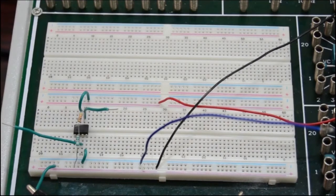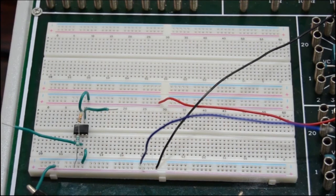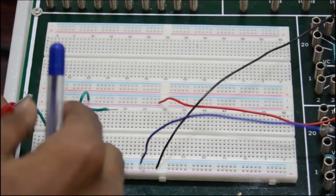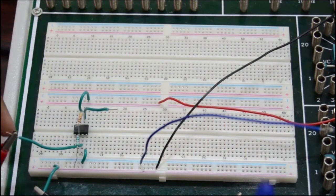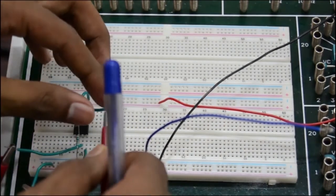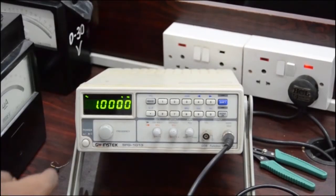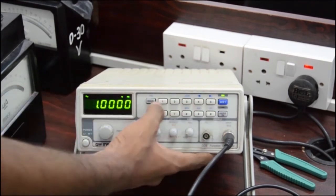Now let's move to non-inverting amplifier. The only difference here is that the input is given at terminal 3 and output is taken from the same terminal 6. The input is again a sine wave of frequency 1kHz and voltage 0.5 volt.